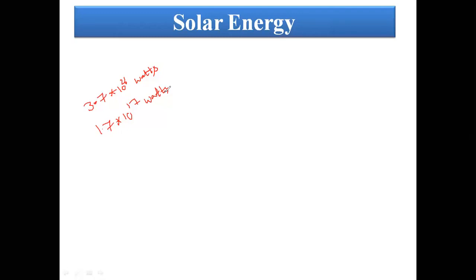Global radiation means the combination of both direct and diffuse radiation. In space, the available power is 3.7 × 10²⁶ watts, but it reaches the earth's surface as only 1.7 × 10¹⁷ watts. If you utilize this 1.7 × 10¹⁷ watts properly, there is no need to depend on other energy sources — that is commercial energy sources such as thermal power plant, hydro power plant, or nuclear power plant.